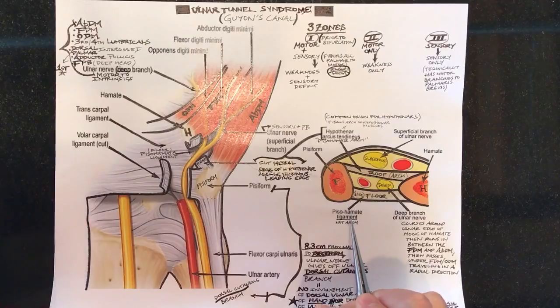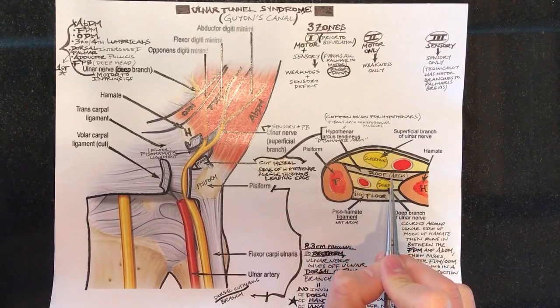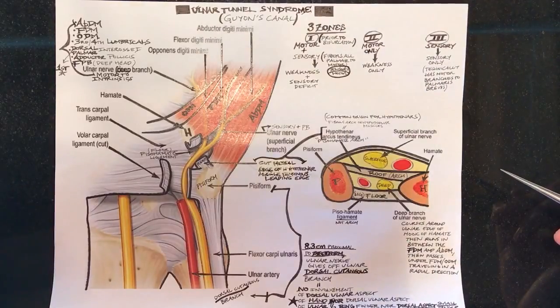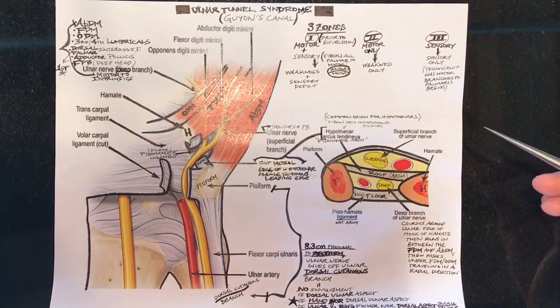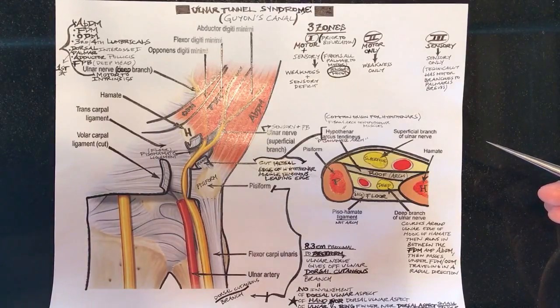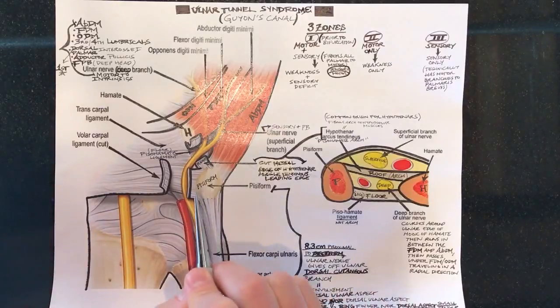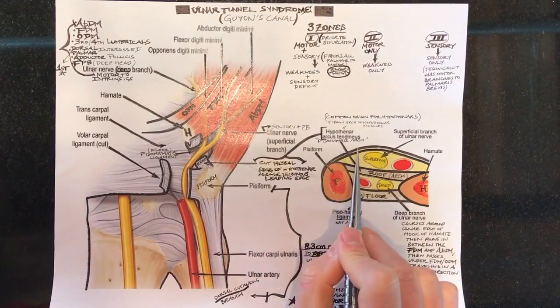Again that is not a ligament but rather it is an arch that spans between the two that allows all of the hypothenar muscles to have a common origin. This is frequently misrepresented in diagrams and miscommunicated because the ligament and the arch are frequently confused.